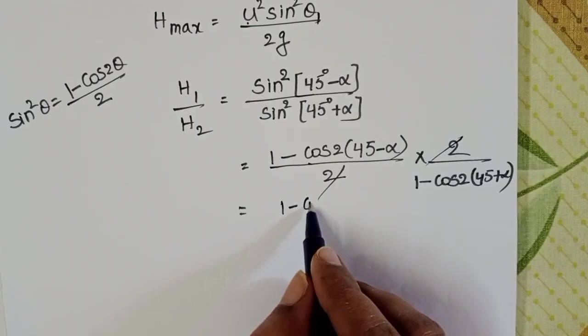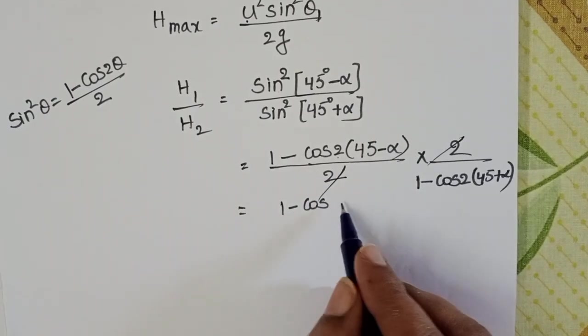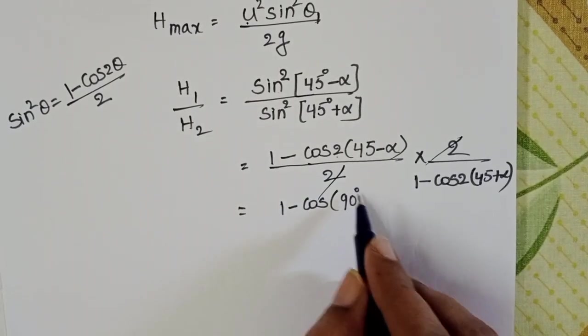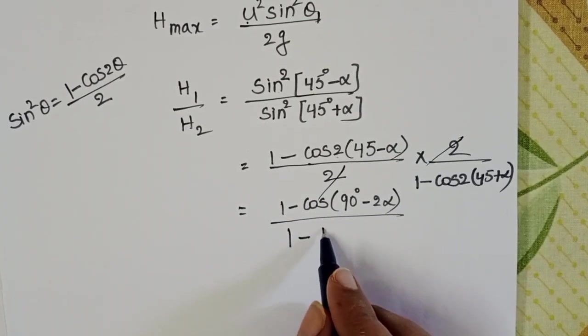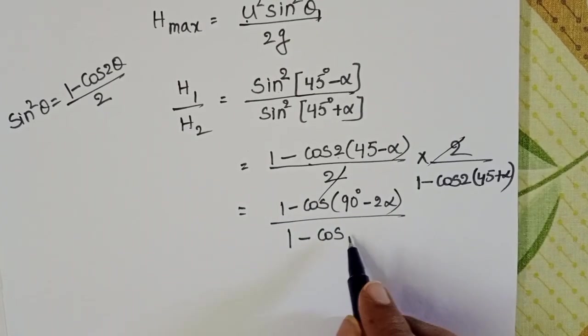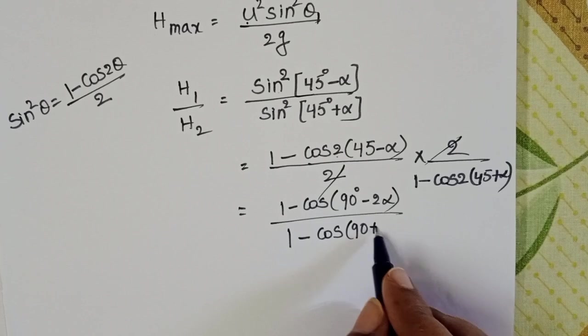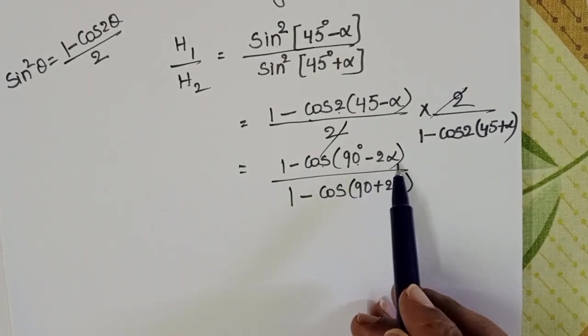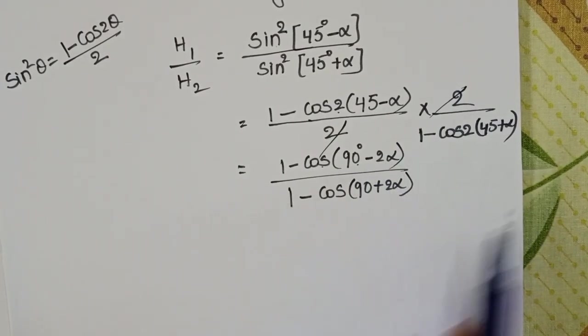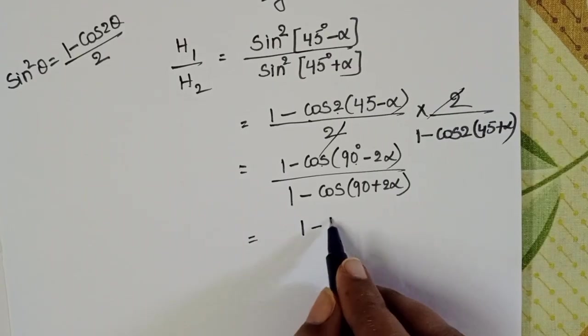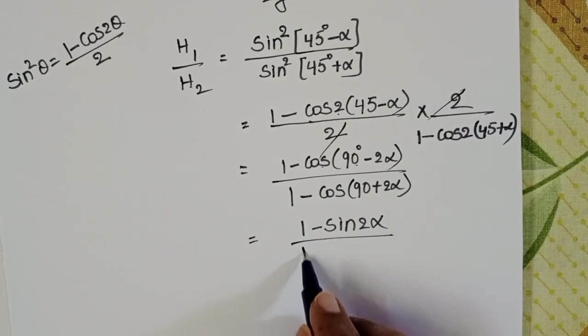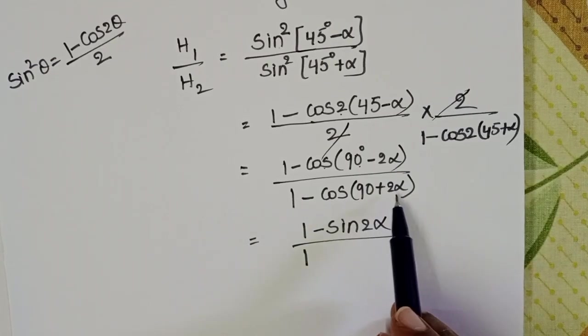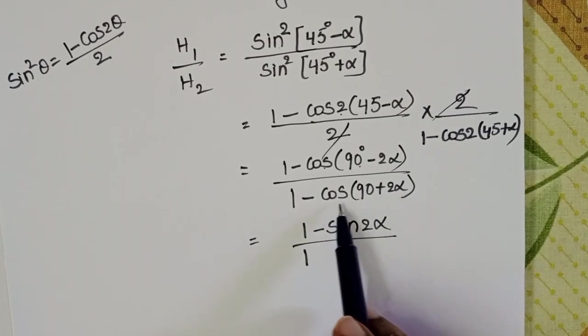1 minus cos 2 times 45 degrees minus 2 alpha by 1 minus cos 90 plus 2 alpha. Cos 90 minus theta equals sin theta: 1 minus sin 2 alpha by 1... cos 90 plus theta in second quadrant, cos is negative.